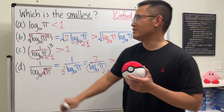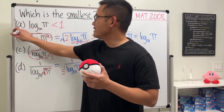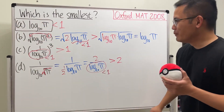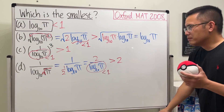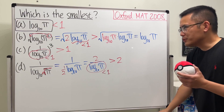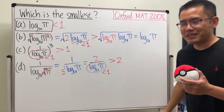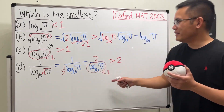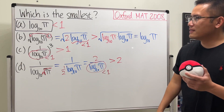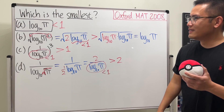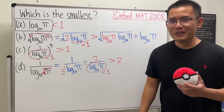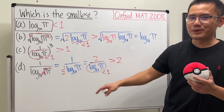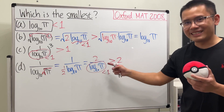B is actually going to be bigger than this, which is bigger than A. Therefore the answer, ladies and gentlemen, is answer choice A. But I'm more bothered by the question I was asking earlier — which one is actually the biggest? We answered the question, that's it.